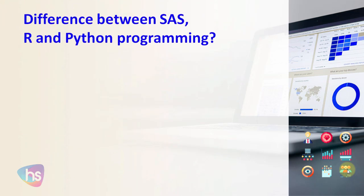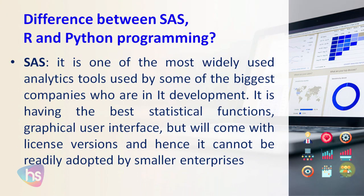Differences between SAS, R, and Python programming. SAS is an analytical tool used by some of the biggest companies in IT development environments. It has the best statistical functions and a graphical user interface, but it comes with a licensed version — there is no open source. Small companies may not be able to spend that much money on SAS licensing.